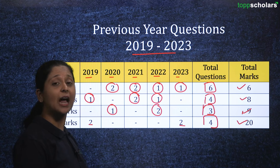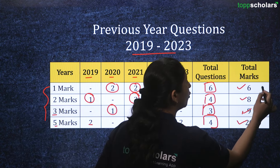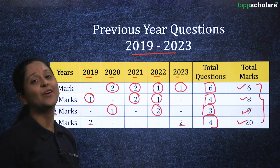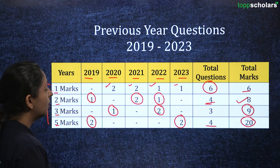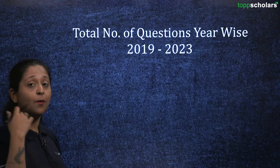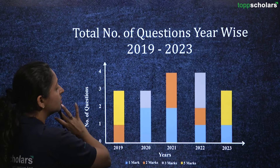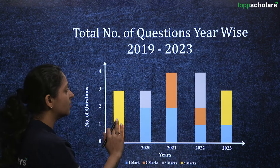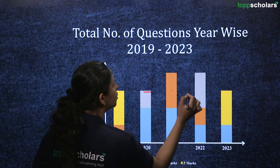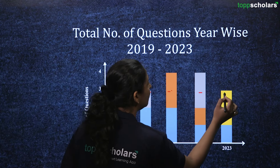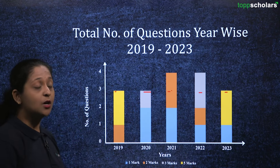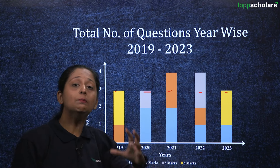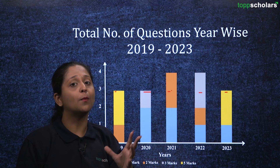So students, you can understand there is great weightage for this particular topic in your exam. Looking at this graph, you can see that a consistency is maintained across all years — minimum three questions appear every year — which helps you analyze how important this topic is.